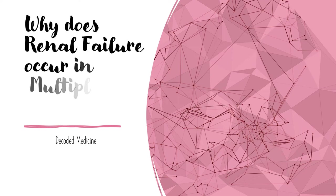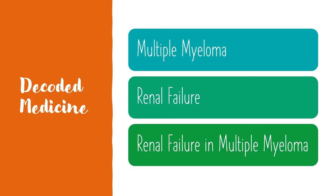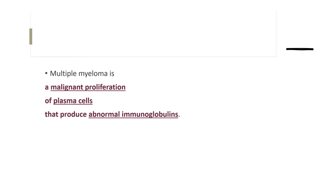Why does renal failure occur in multiple myeloma? This question can be answered by understanding the basic pathogenesis of multiple myeloma, renal failure, and then understanding the link between the two. Watch this short clip from one of my previous videos explaining the pathogenesis of multiple myeloma.